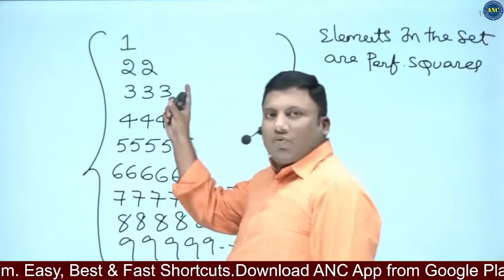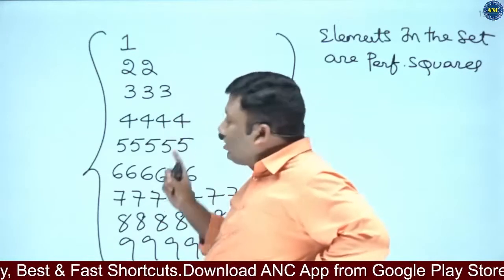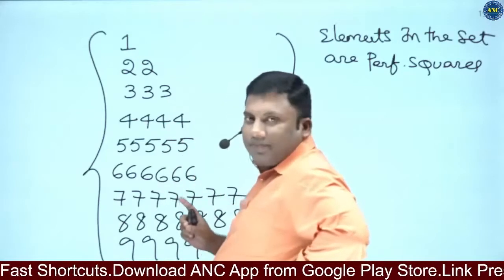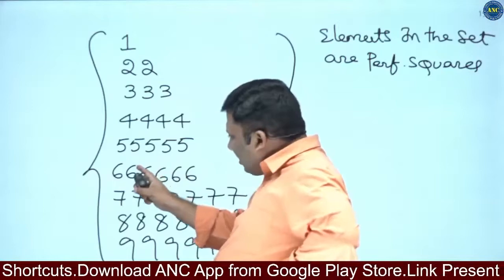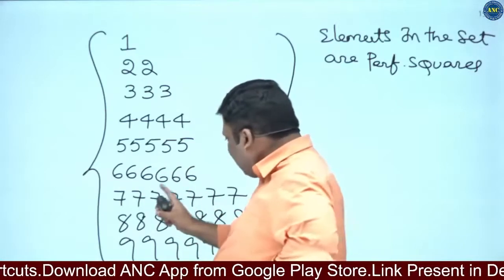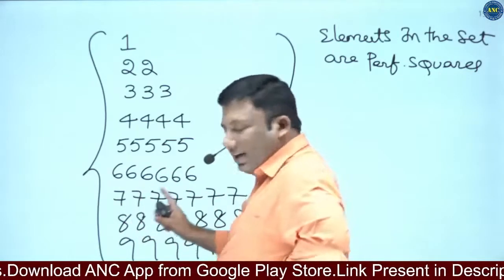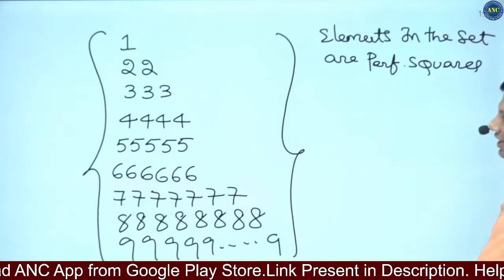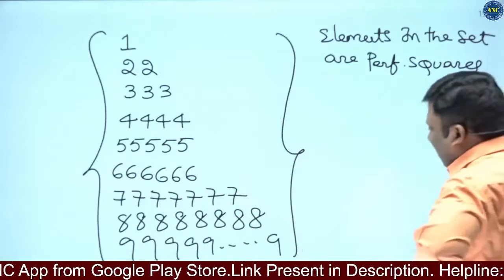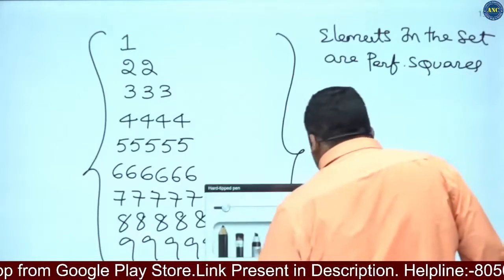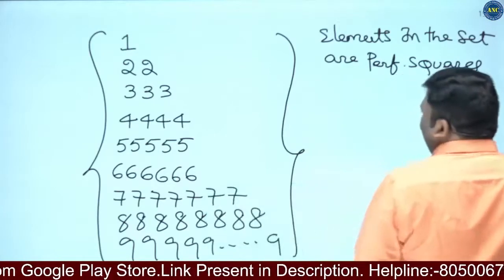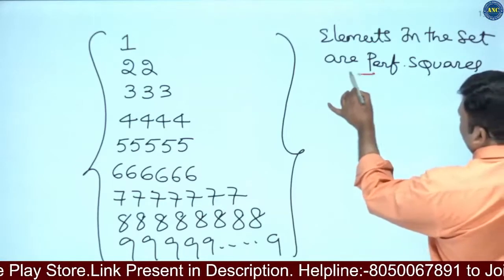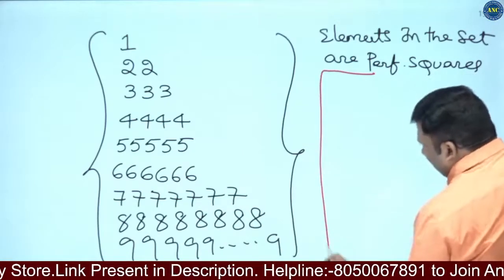So the elements are: 1 (written once), 22 (written twice), 333 (written thrice), 4444 (written 4 times), 55555 (written 5 times), 666666 (written 6 times), 7777777 (written 7 times), 88888888 (written 8 times), 999999999 (written 9 times). Each digit is written that many number of times. Which elements in the set are perfect squares?